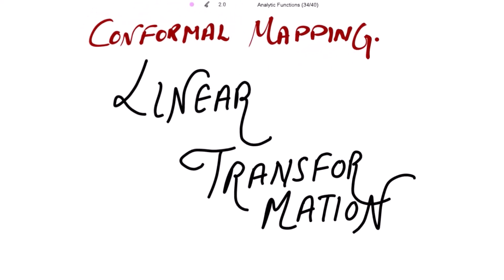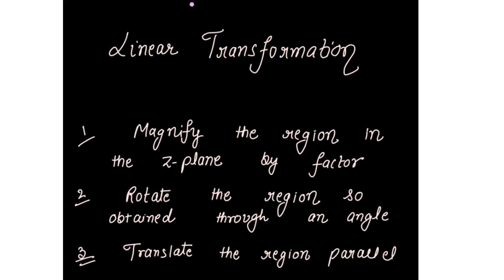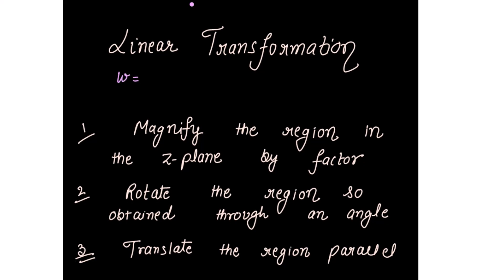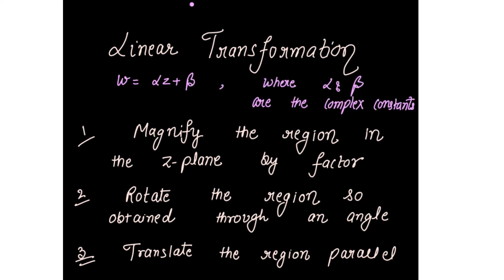Today we are going to start the transformation named as the linear transformation. Linear transformation is of the type w = αz + β, where α and β are complex constants. This transformation is the resultant of magnification, rotation, and translation. To obtain the desired transformation, we first magnify the region in the z-plane by the factor |α|, then rotate the region so obtained through an angle arg(α).